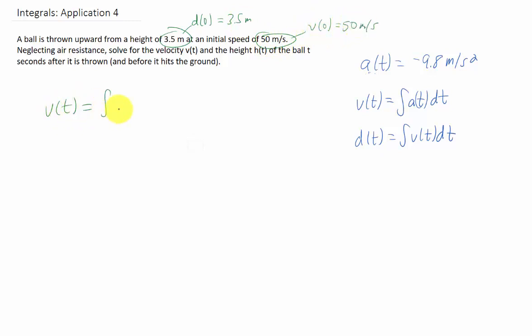We have that the velocity of our ball is the integral of our acceleration. That's the integral of negative 9.8. Well, to integrate a constant, you just tack a t on the end and we get that our velocity function is just negative 9.8t plus some constant.